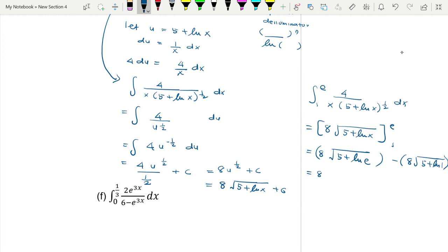ln e is 1, so 5 + 1 is 6. Minus 8... ln 1 is 0, so it will be 8√5. You may simplify, factorize the 8: 8(√6 - √5). So this is our final answer.